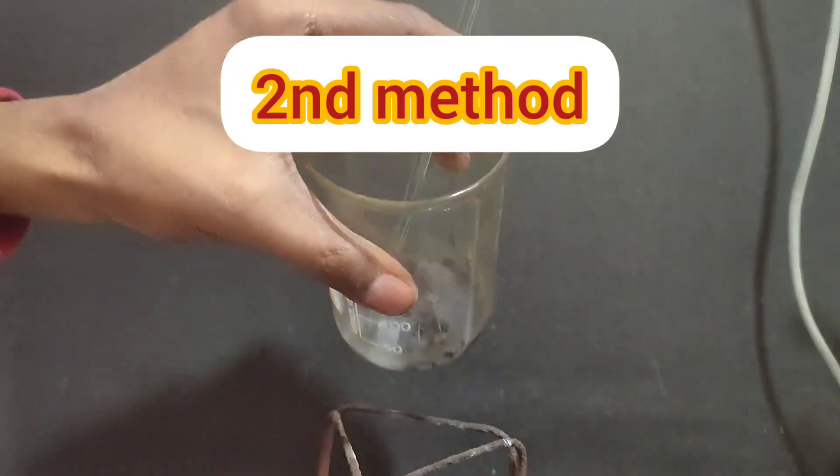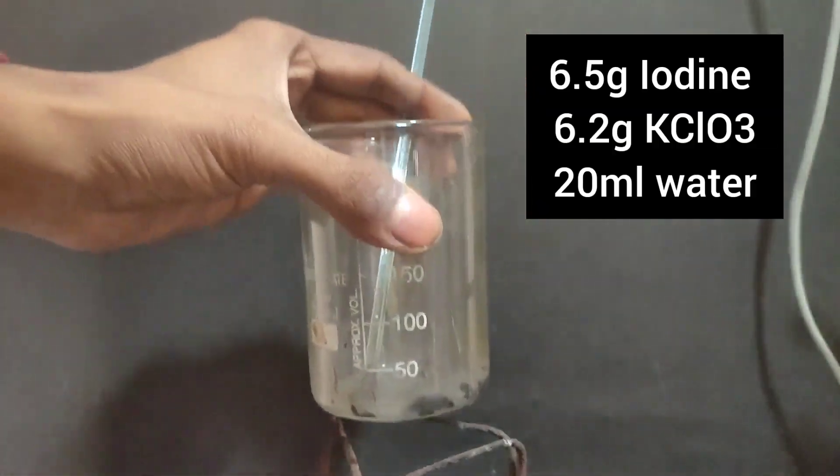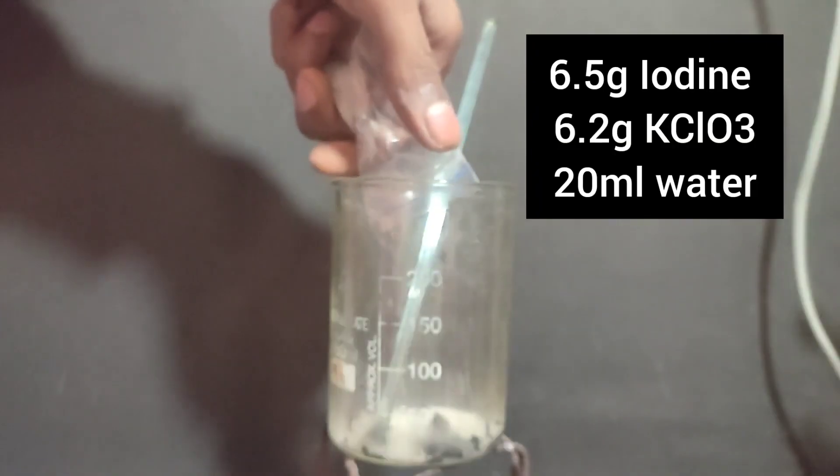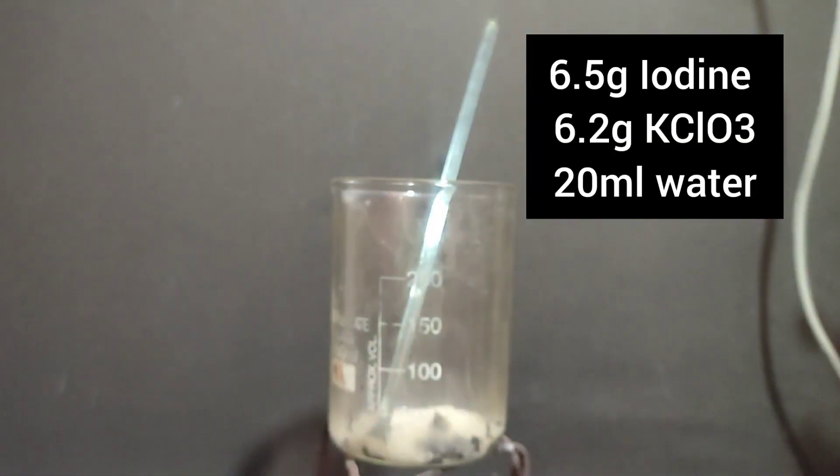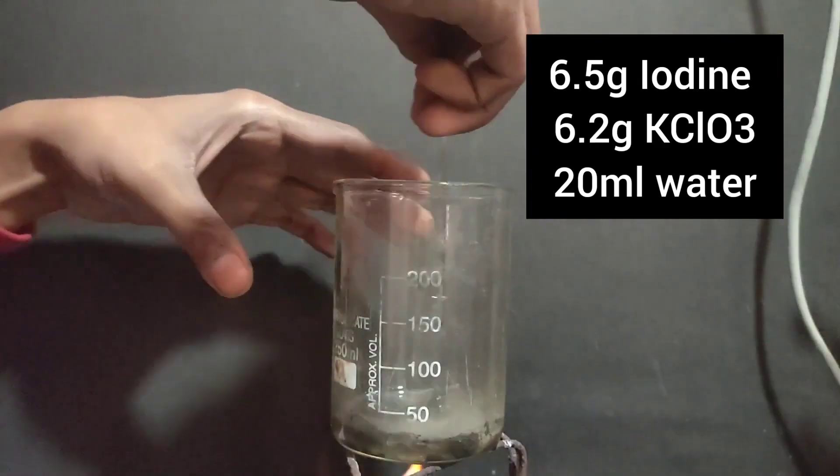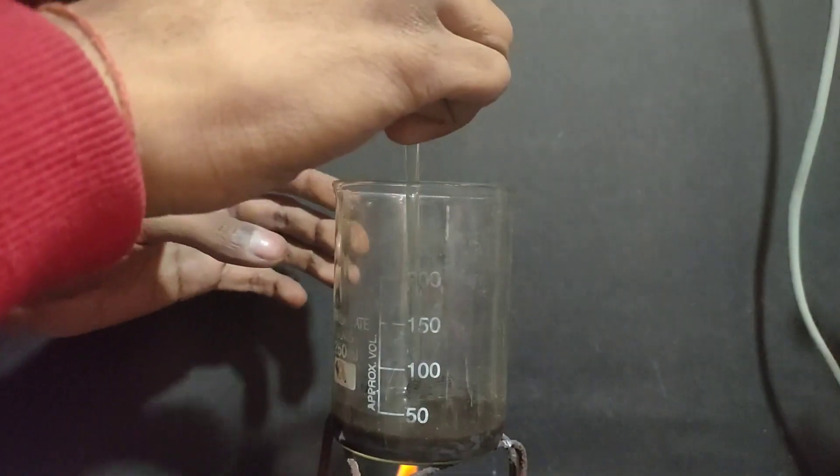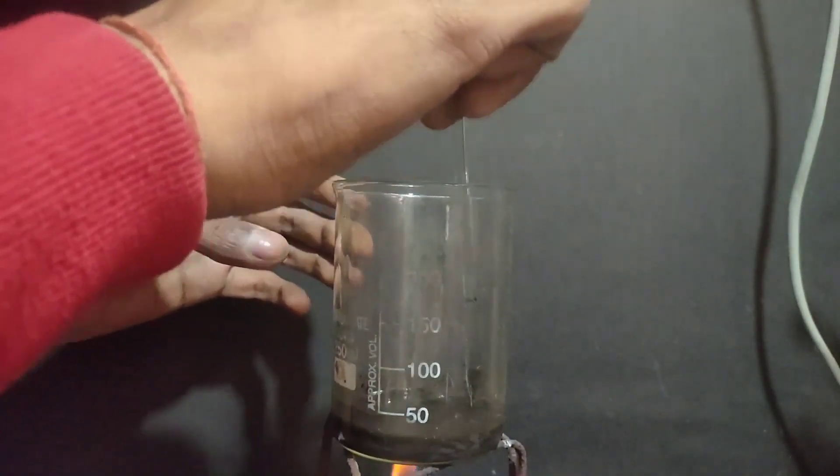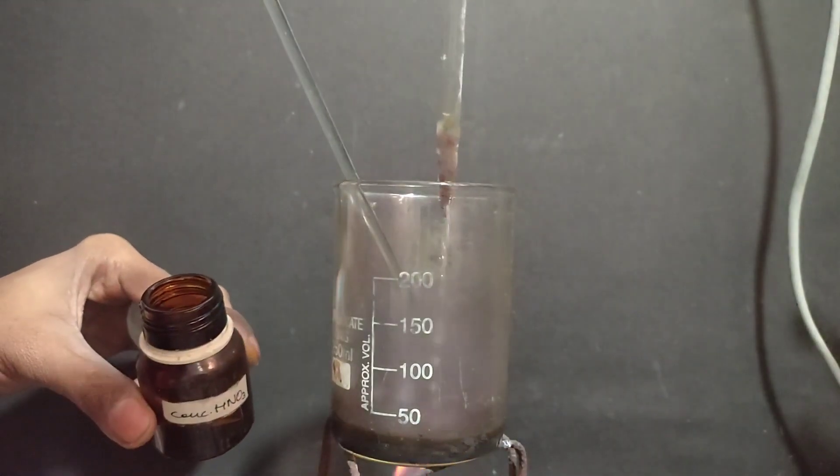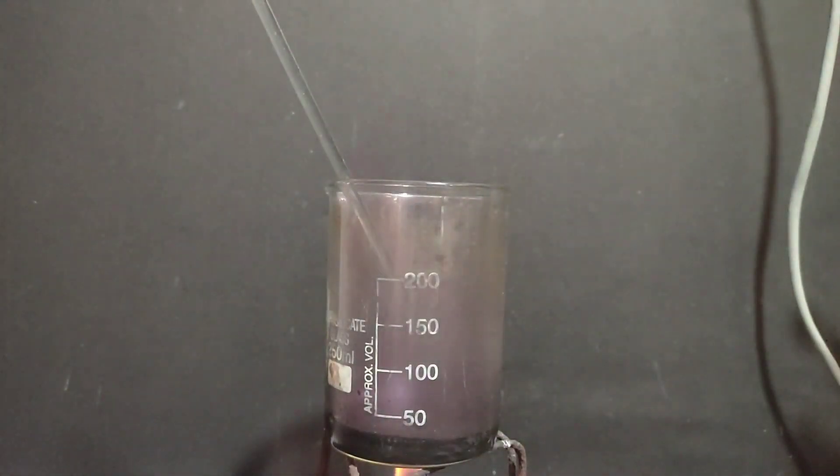Now for the second method, I took 6.5 grams of iodine in a beaker. To it, I added 6.2 grams of potassium chlorate and 20ml water. Now I started heating the solution and stirred with a glass rod. To start the reaction, one drop of concentrated nitric acid has to be added.